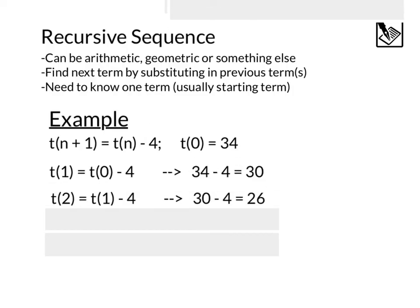Next, if we want to find t(2), our second term, that would be 1 plus 1, is 2. Then we have t(1) minus 4. So we'll take this 30 and substitute it in for the t(1), giving us 30 minus 4, which is 26. So t(2) is 26.